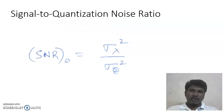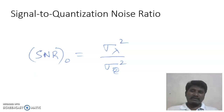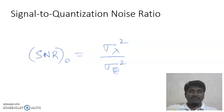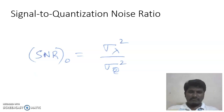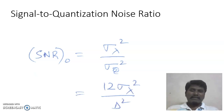The output signal-to-quantization noise ratio (SQNR) is calculated as signal power divided by noise power. The noise here is not real noise — it is the quantization error introduced during the quantization operation. We already calculated the quantization noise power as δ²/12. Substituting this, we get the expression 12σ_x² / δ² for the SQNR, where σ_x² is the signal power.